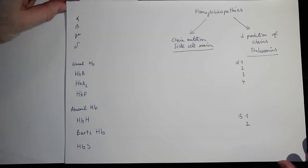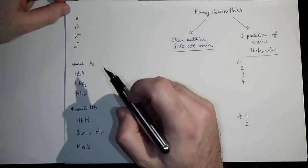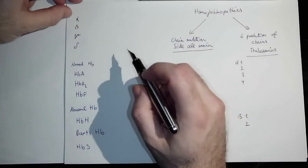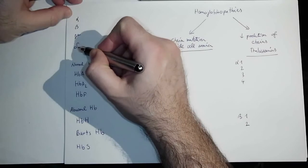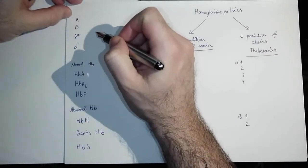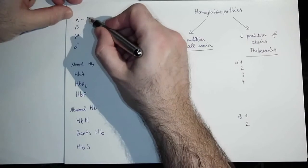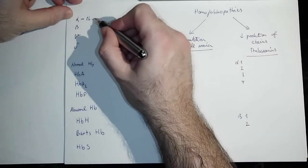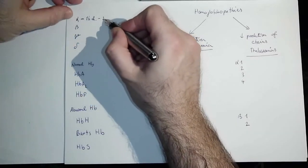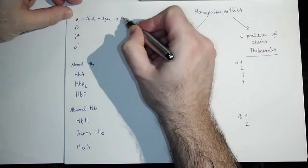First of all, to remind you of physiology concerning hemoglobin chains: we've got the alpha, beta, gamma, and delta chains. Basically, alpha is a bit different because it's coded on chromosome 16 and it actually has two genes, thus four alleles.